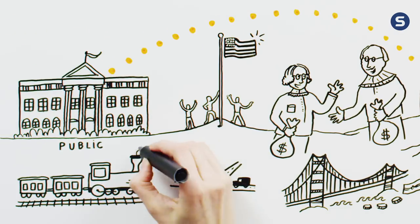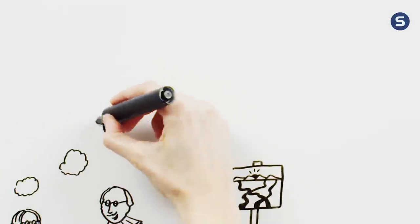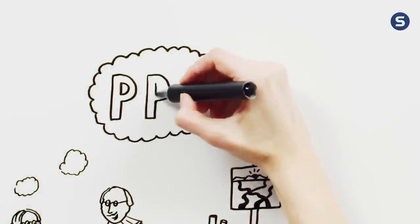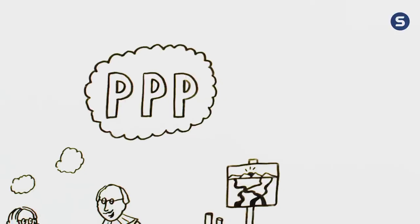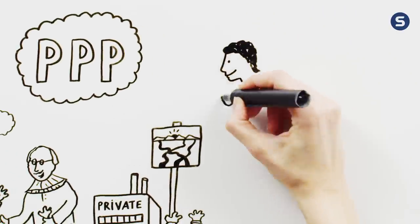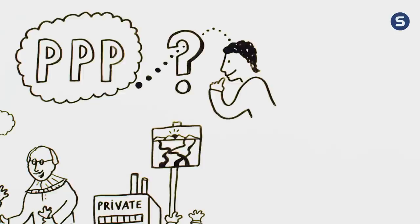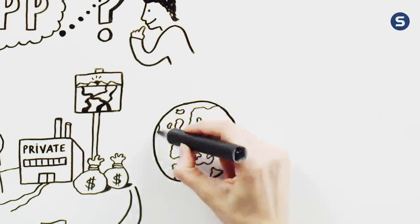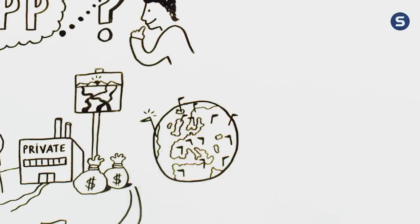Today, we call such cooperation a public-private partnership. And in everyday conversation, we abbreviate it to PPP. But what is PPP really? And why is this highly successful model that's used around the world perfect for the U.S.?